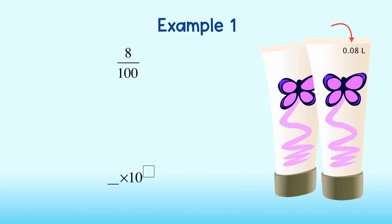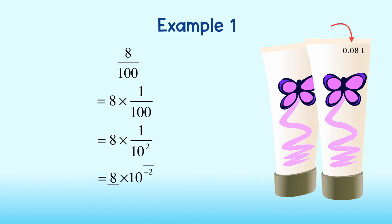So first, let's rewrite this as a multiplication problem. We can write this as eight times one-hundredth. Rewriting this using a power of 10, we get eight times one over ten to the second power. Lastly, using the negative exponent rule, we can write this as eight times ten to the negative second. Eight one-hundredths liters is the same as eight times ten to the negative second liters.